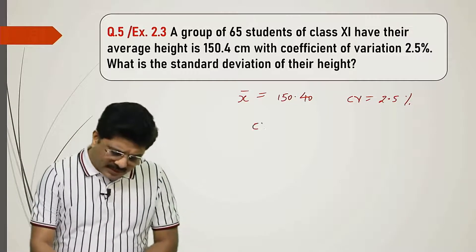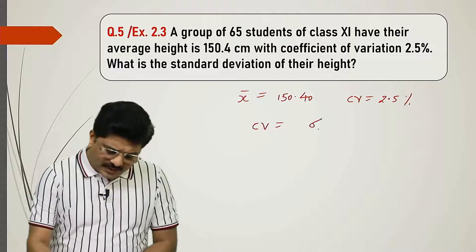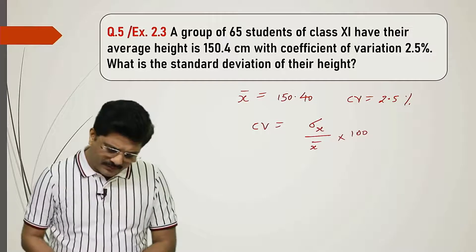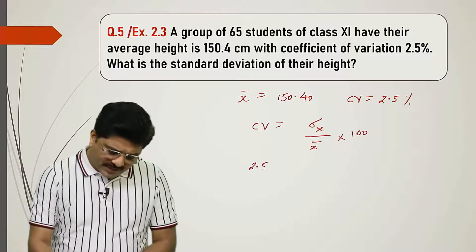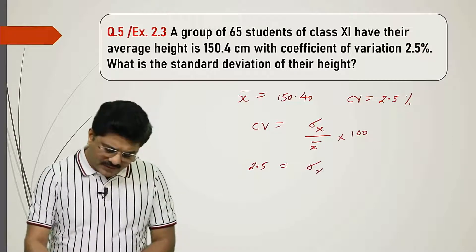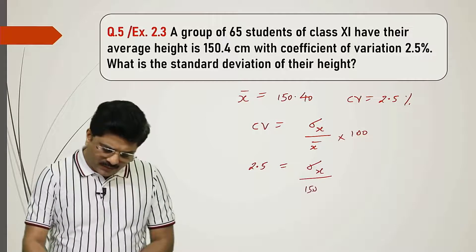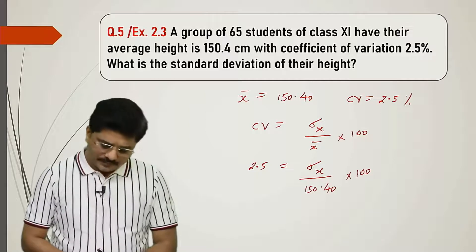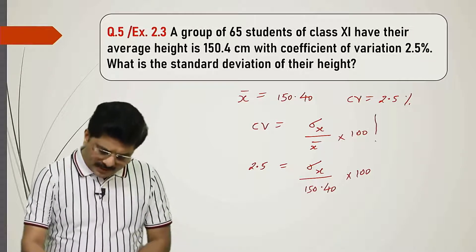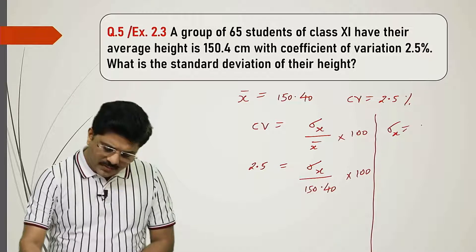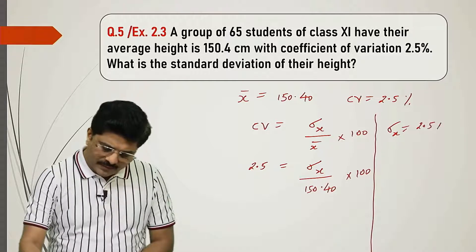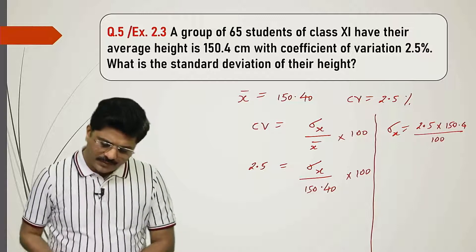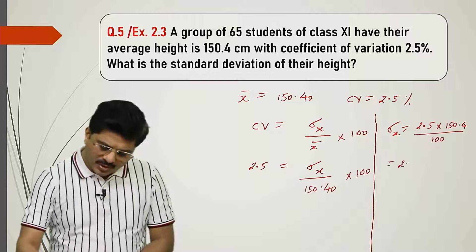This is a very simple question. First, CV ka formula. CV formula is standard deviation of X upon X bar into 100. So it is 2.5. Standard deviation of X we don't know, upon 150.4 into 100.